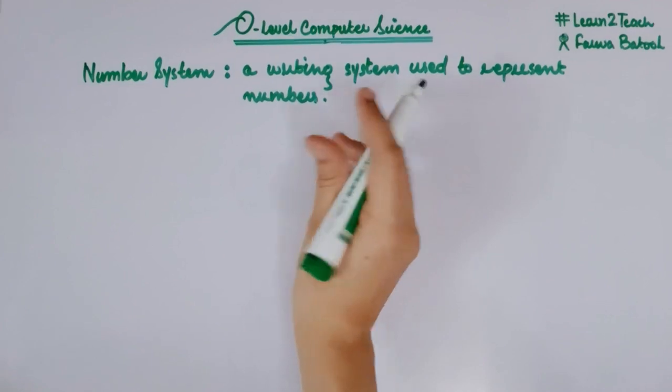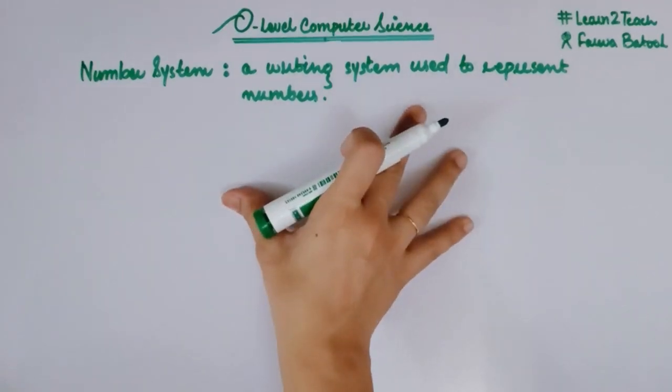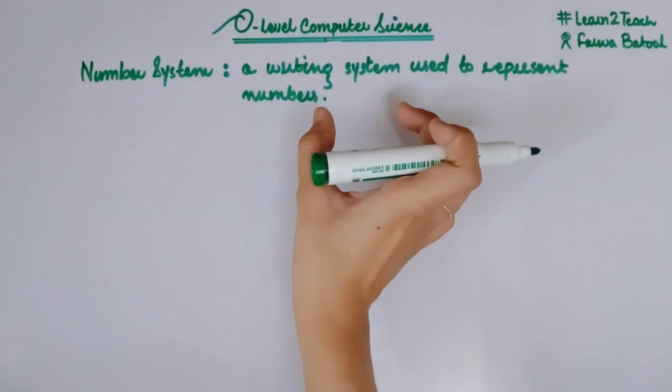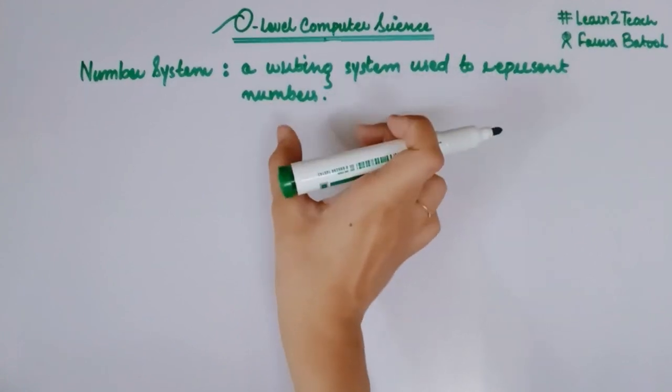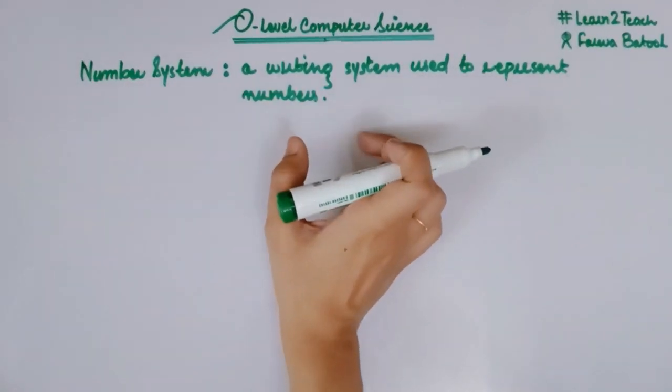Here we go. So this is the definition of number systems. A number system is basically a writing system that is used to represent numbers. Let me give you an example.